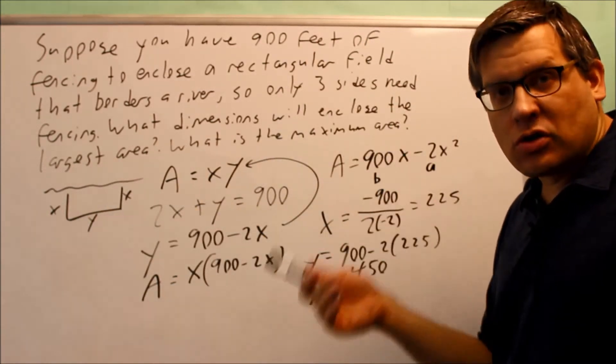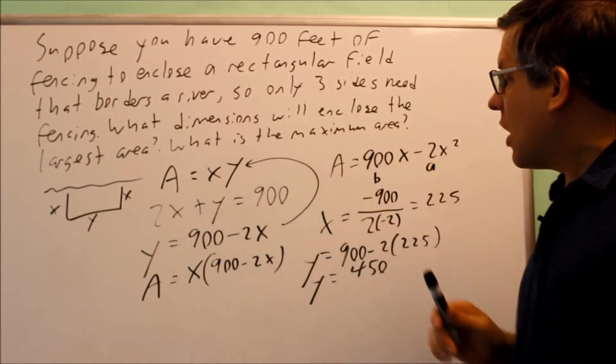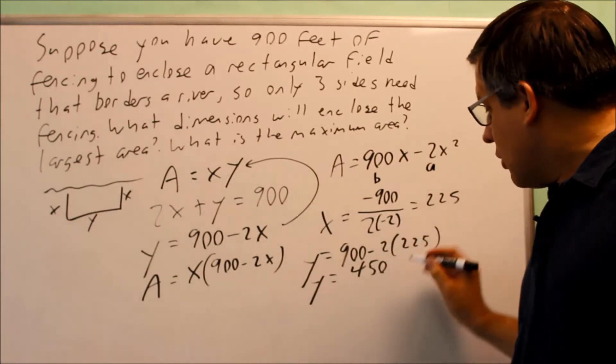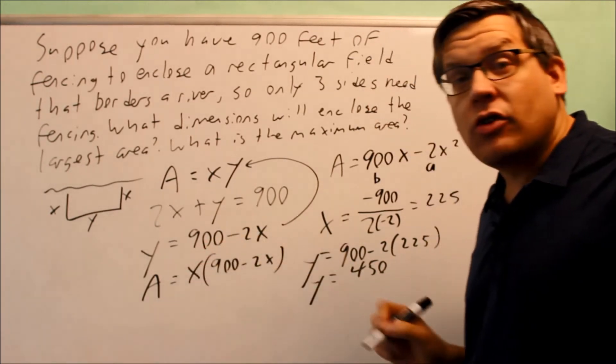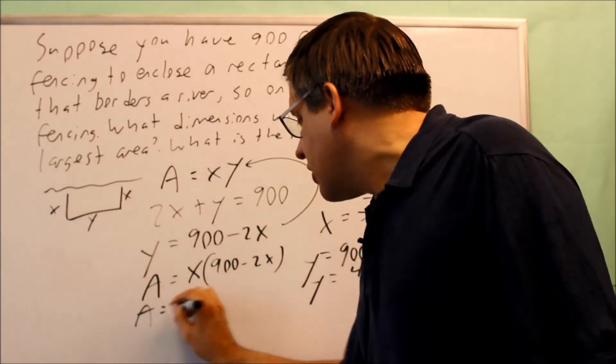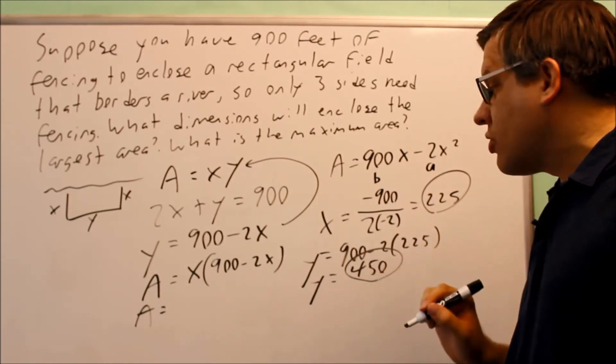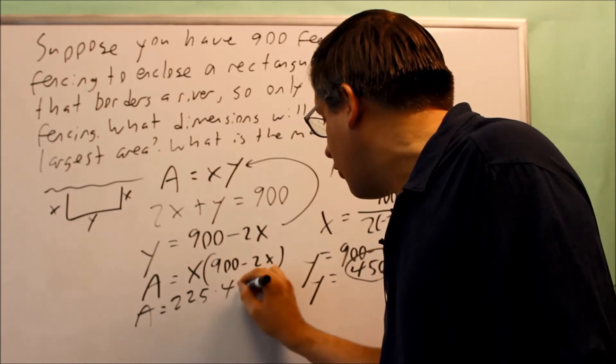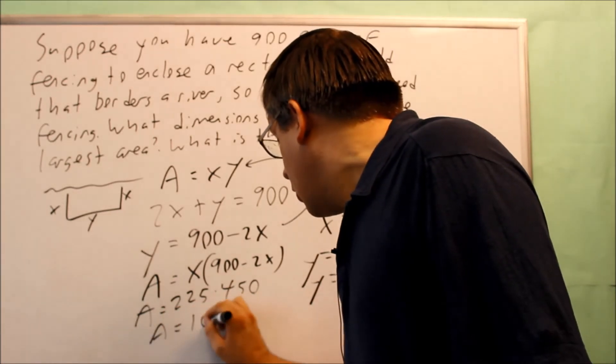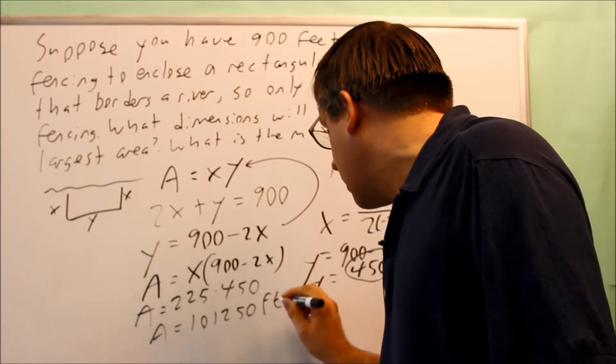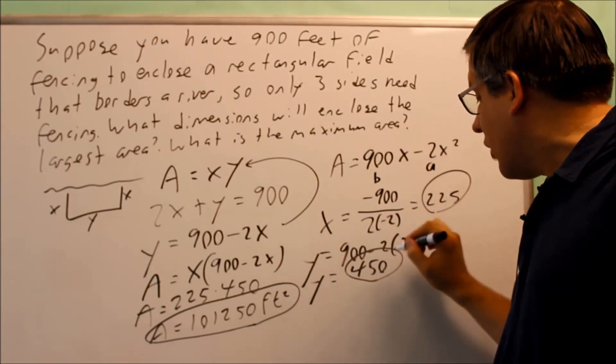The last question asks what's the maximum area. You could take 225 and put it inside this equation, and that'll give you the maximum area. What you also could do is use the formula area equals x times y. We have both these values, so you could just do 225 times 450. Either way, you're going to get 101,250—that'll be feet squared. That would be the maximum area that can be enclosed if x is 225 and y is 450.